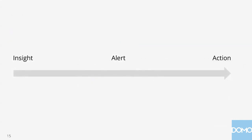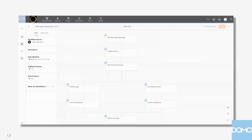If you think about the continuum we just talked about — it started at Insight and ended at Action — well, now that's going to go all the way to Automation. Think about all the use cases you have for Domo. They're going to fall somewhere on here, and how high-value the use case is to the company and how frequently it's a problem is what's going to drive whether you take that next step.